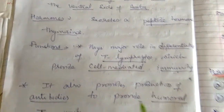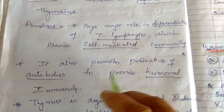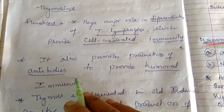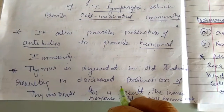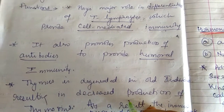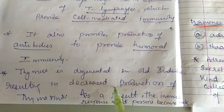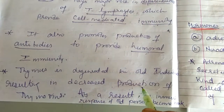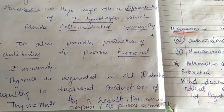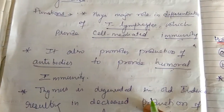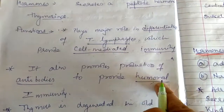The 'T' in T lymphocytes stands for thymus. The thymus gland also promotes the production of antibodies, and these antibodies provide another type of immunity called humoral immunity. If the thymus gland degenerates — it is very much functional in the young stage, but as the person grows, in adults this thymus gland shrinks and the formation of thymosine hormone also decreases. As a result, the immune response of older persons becomes very weak because of less production of thymosine hormone.